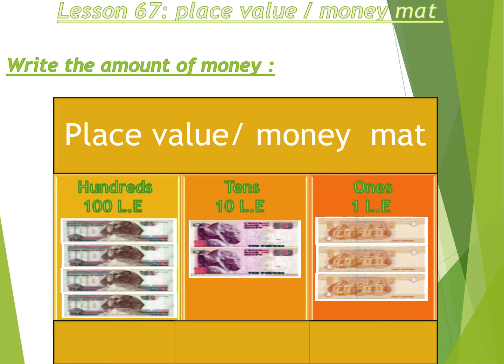Now for the next number: how many hundreds? Four. How many tens? Two. How many ones? Three. We are looking at the amount of 423 pounds — 400, twenty, three, making 423 pounds.